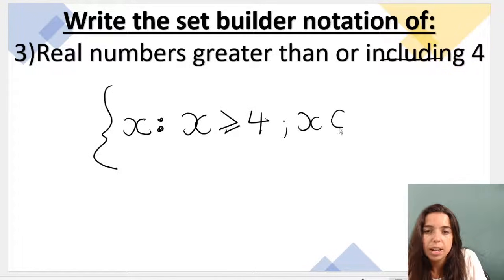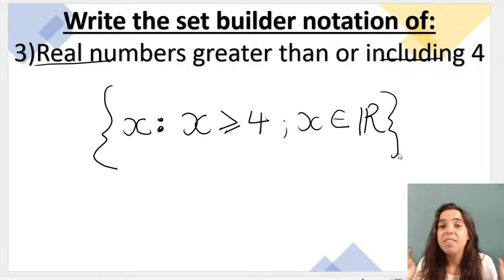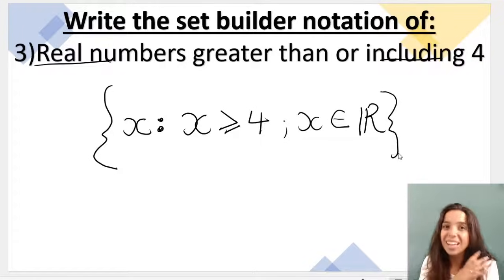Semicolon x is an element of, now be careful, x is an element of real numbers. So we use our r. You need to know your symbols. And then you close your curly brackets. That is set builder notation. And that's it. In the next video, we'll be covering interval notation.